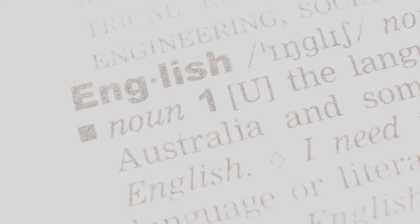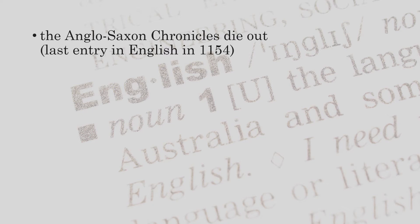Written English especially came under threat, as French was used by the upper, educated classes, and Latin was generally used as a language for written records. The Anglo-Saxon Chronicles gradually died out; records switched to Latin, with very few exceptions. The last entry in English was found in the Peterborough monastery in 1154.